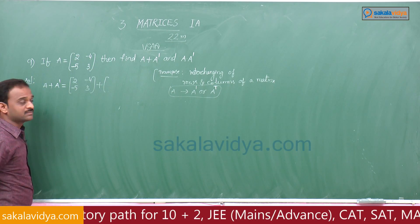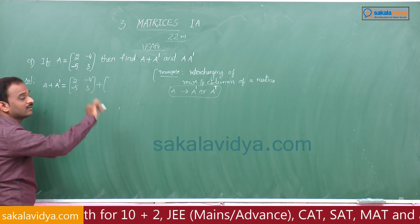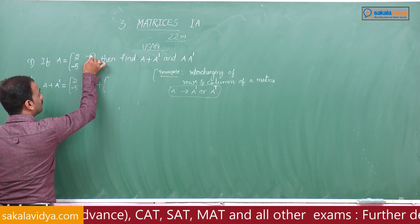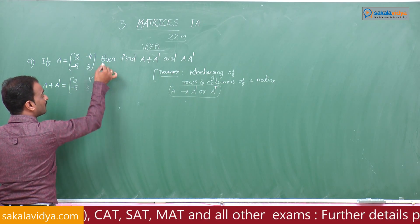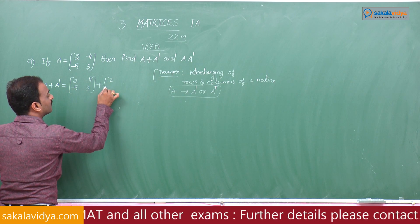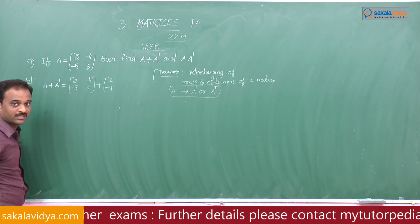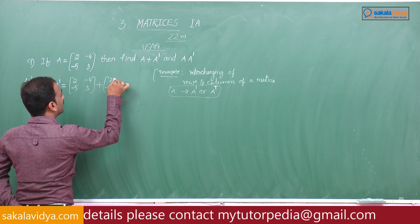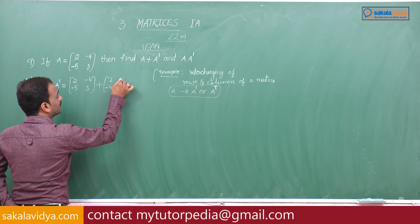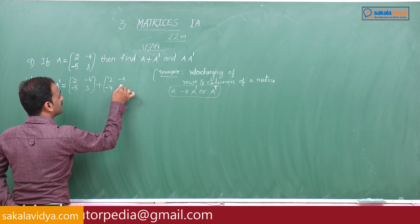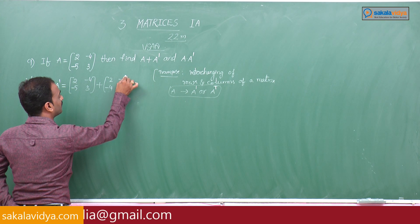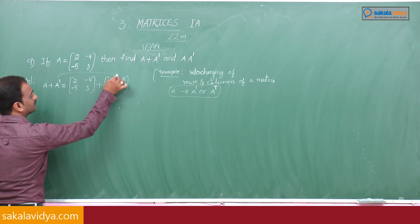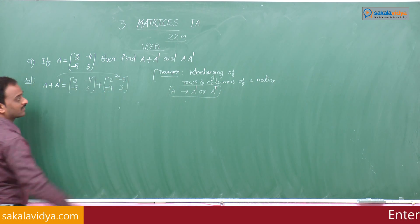Interchanging rows and columns: the first row elements 2, -4 become the first column, and the second row elements -5, 3 become the second column. This gives us A transpose.